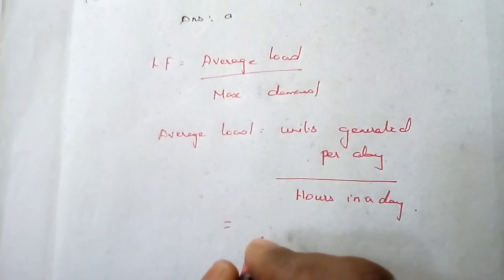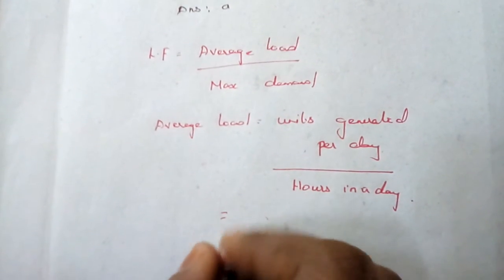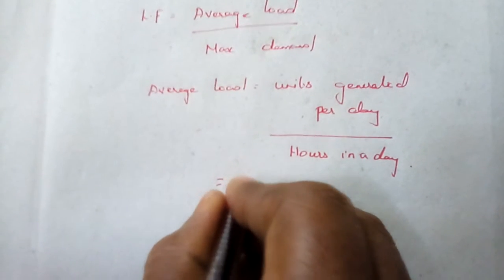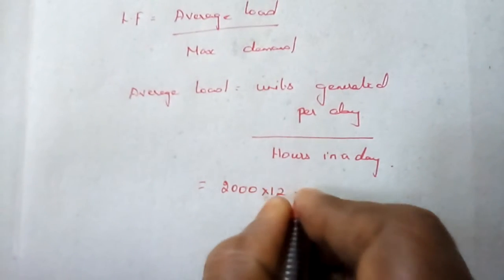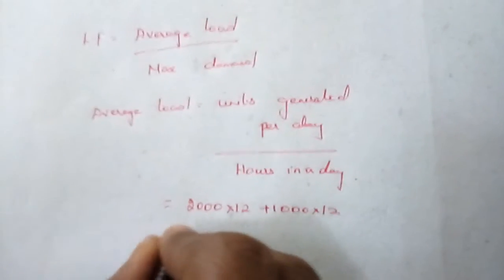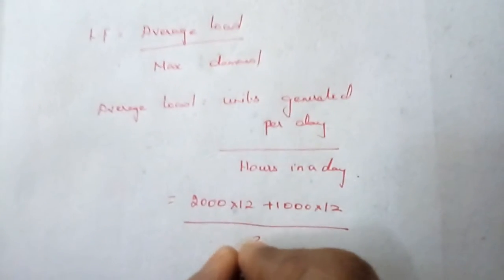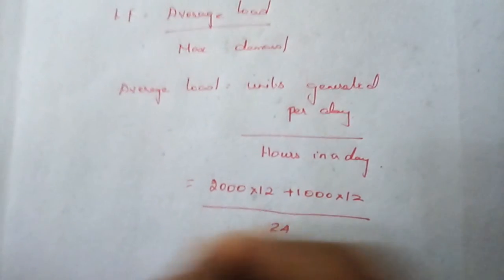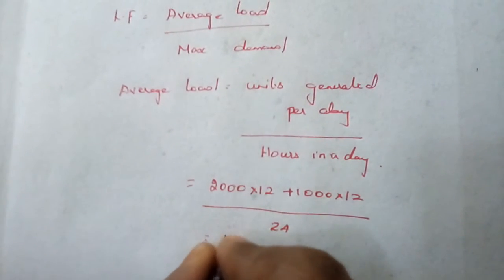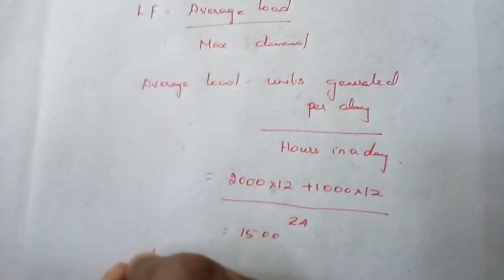Let us find out the average load first. The average units generated per day is given by: 2000 into 12 plus 1000 into 12, divided by the total hours which is 24. By this we get the answer of 1500 kilowatt.